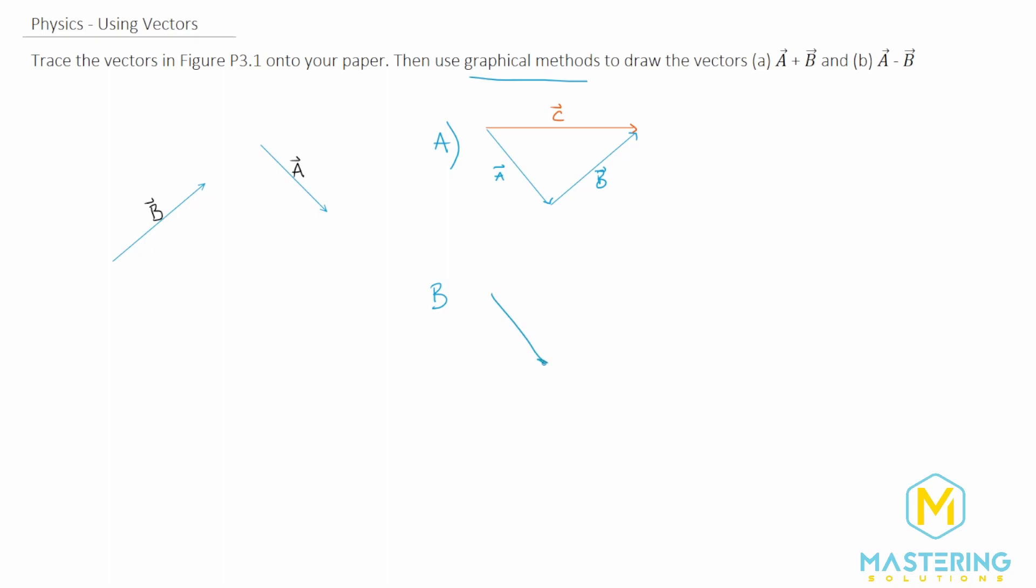So we have A coming down like this, and then B normally goes up like this, but we're going to take it and go backwards. But whenever we do the two vectors, we still do the tail to tip, so now we need to slide it. So let's come over here.